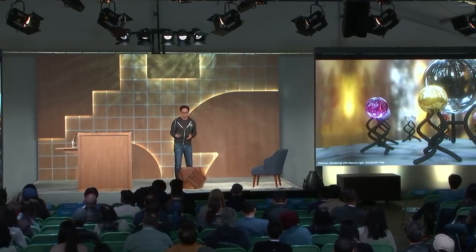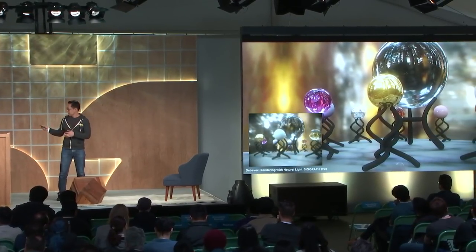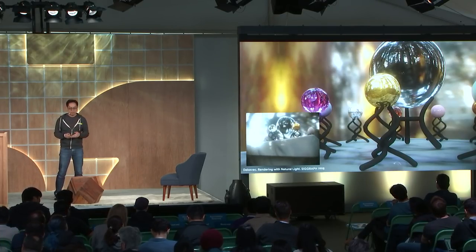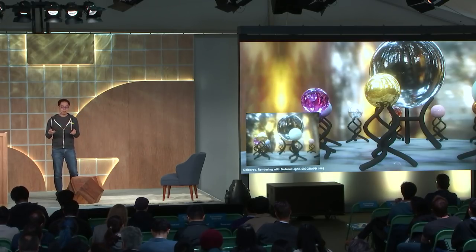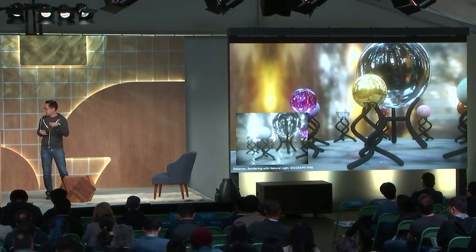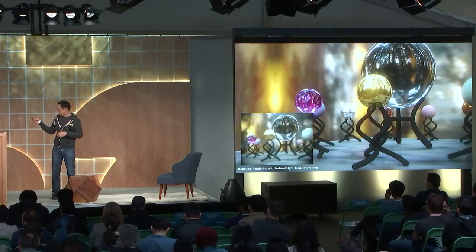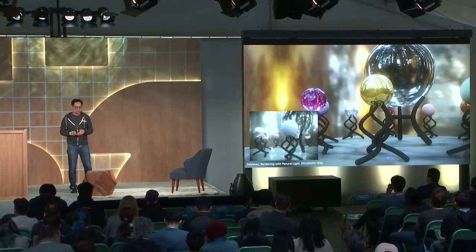Thank you, Konstantin. My name is Alex Ma. I'm a software engineer at Google Daydream. Let's take a look at this beautiful picture — it's an image of computer graphics rendering from a short film, rendering with natural light, produced by Dr. Paul Debevec and his team in 1998. All the spheres, holders, and table are actually 3D models — they are not real. Only the background and the environment light itself were captured from the real world. This is a very good example of how environmental lighting can contribute to the realism of virtual objects, even when the geometry is very simple.